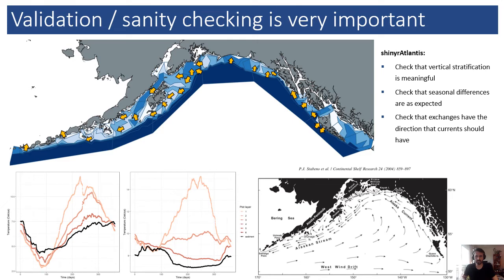It is very important to conduct thorough validation of any approach for translating ROMS to Atlantis models. One very important tool we're using a lot is the Shiny ART Atlantis package developed by Shane Richards and Javier. That allows you to check things like stratification of salinity and temperature, making sure everything looks correct — warmer water in summer, cooler water in winter. The same goes for the fluxes: if you know you have consistent upwelling or downwelling in some areas, there are functions to visualize all of this and make sure the products from the translation job make sense with the oceanography of the area.